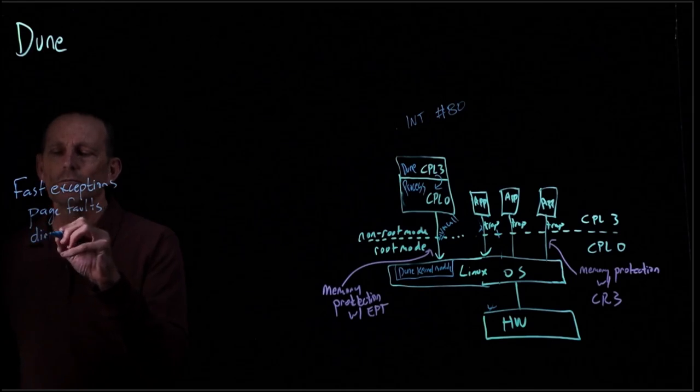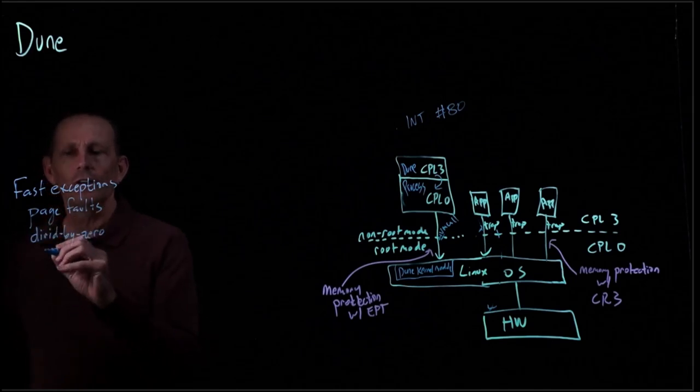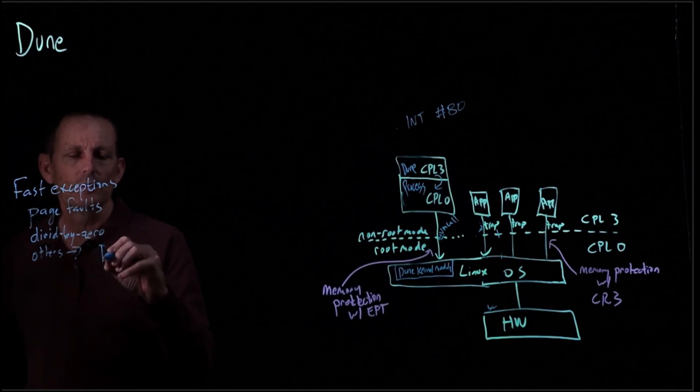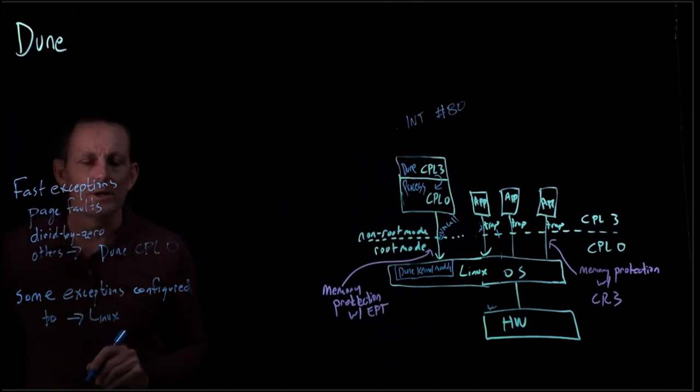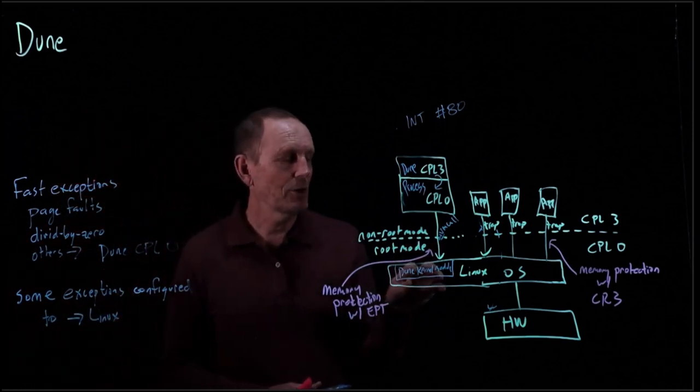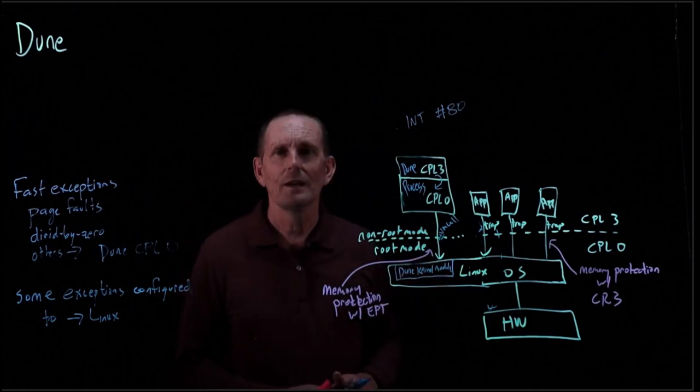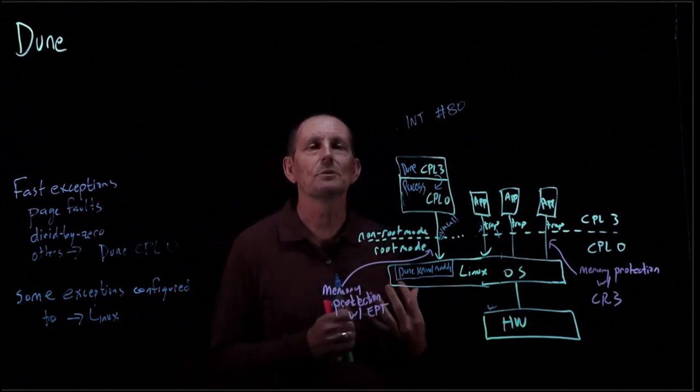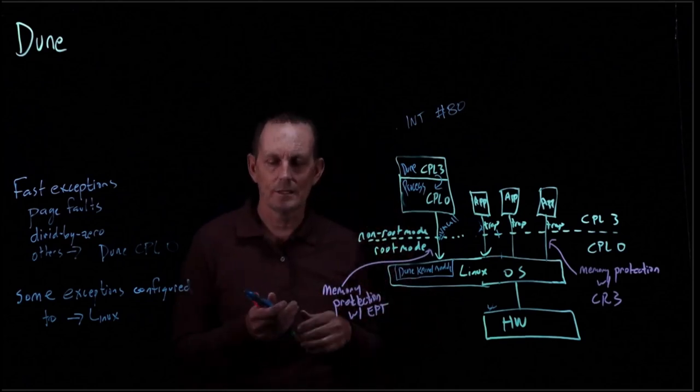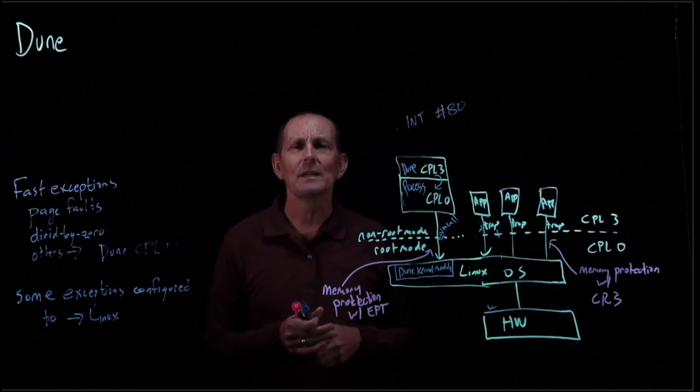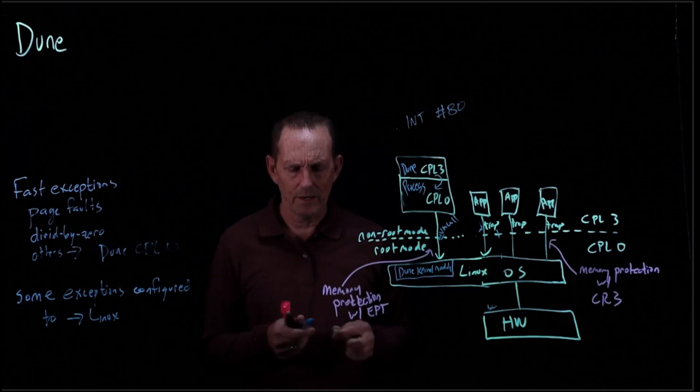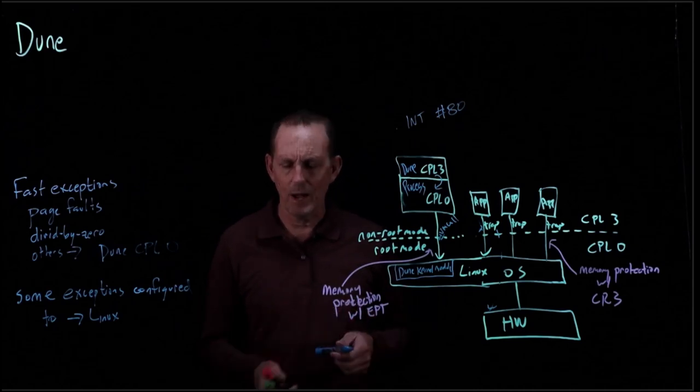We don't have to go through this general mechanism of sending out a signal. We have page faults. What else? We might have divide by zeros. We might have other faults that go directly to the DUNE CPL0. Some of the exceptions are configured to go to Linux. They actually go into this little DUNE kernel module here that will then dispatch it out to Linux.